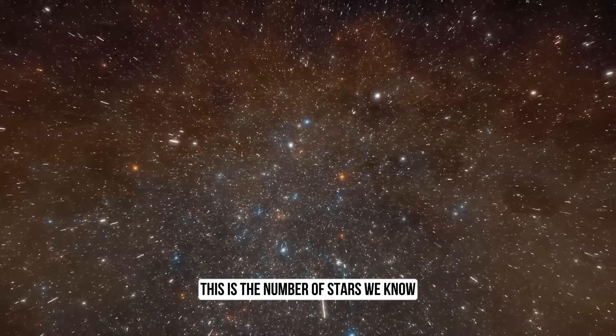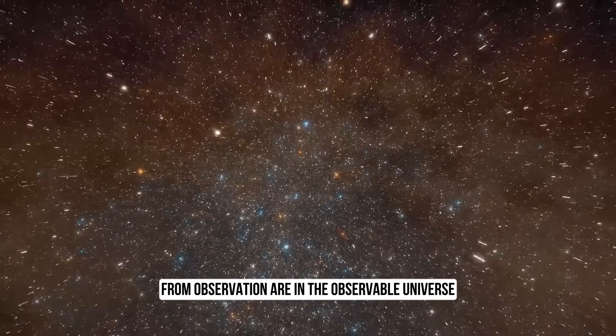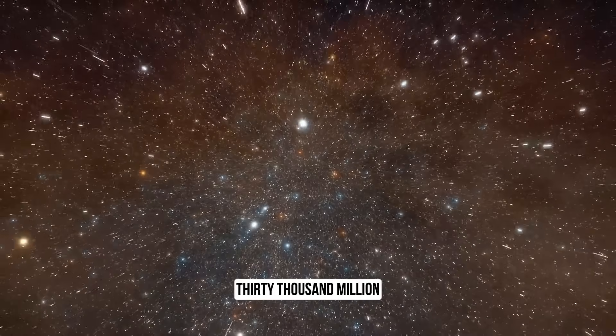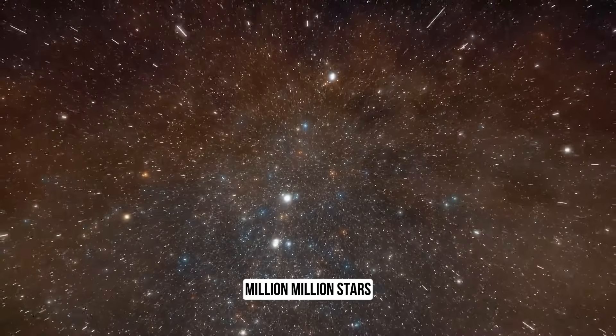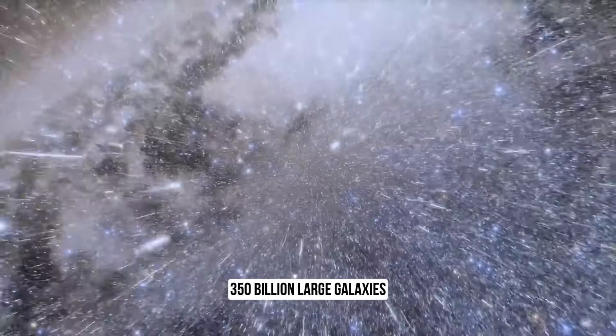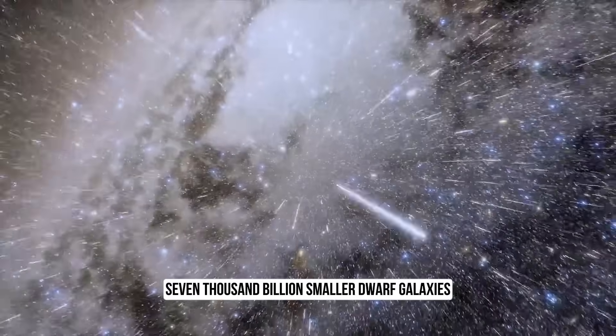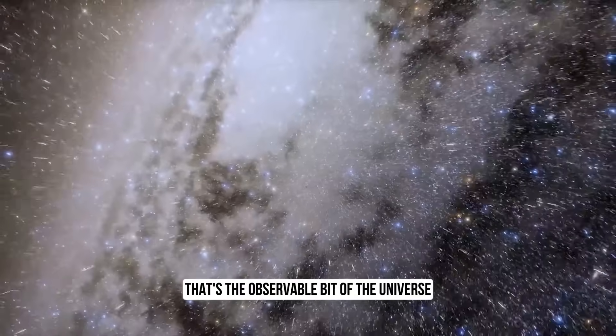This is the observable universe. This is the number of stars we know from observation are in the observable universe at the moment. Thirty thousand million million million stars, just like our sun, some bigger, some smaller. Three hundred and fifty billion large galaxies, seven thousand billion smaller dwarf galaxies. That's the observable bit of the universe.